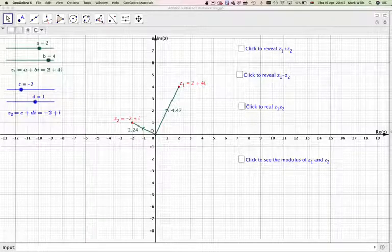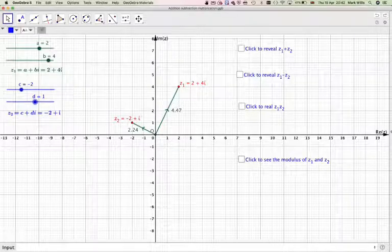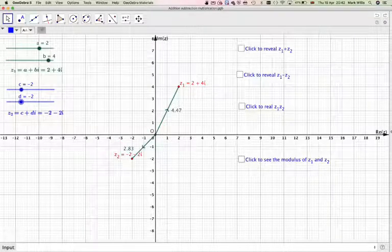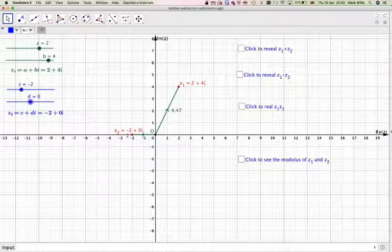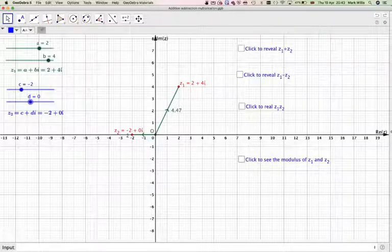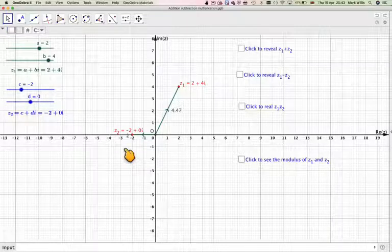And we can move these around. If you see, we can move them around here. For example, here we've got no imaginary part, so it would just be a line of reference to the point minus 2 on the x-axis.